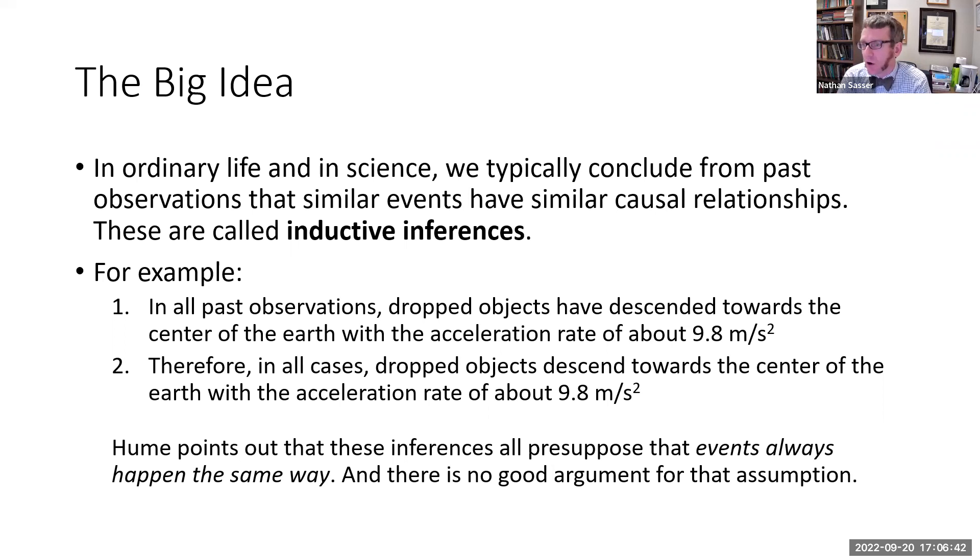That's a term Hume doesn't use but that's what we commonly refer to these inferences as today. Here's an example: In all past observations, dropped objects have descended towards the center of the earth with the acceleration rate of about 9.8 meters per second squared. Therefore, in all cases whatsoever, even the ones that haven't happened yet or the ones that nobody ever observed, we can safely assume that dropped objects descend towards the center of the earth with the acceleration rate of about 9.8 meters per second squared.